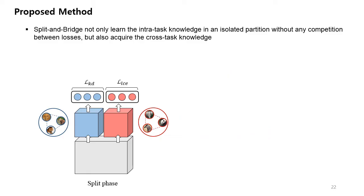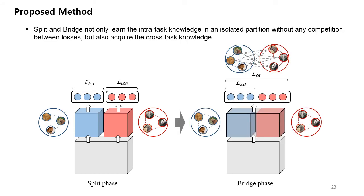In order to overcome this problem, we propose a two-phase learning method called split and bridge, that can effectively learn all the three types of knowledge without intervention from learning the others. To this end, we first partially split the network to learn intra-old and intra-new knowledge in an isolated partition without any competition between losses. This is called split-phase. And then, in the bridge-phase, it reconnects the partition network so that at this time, cross-task knowledge can be learned.